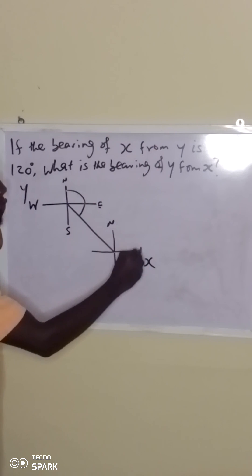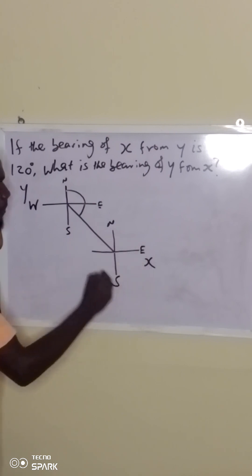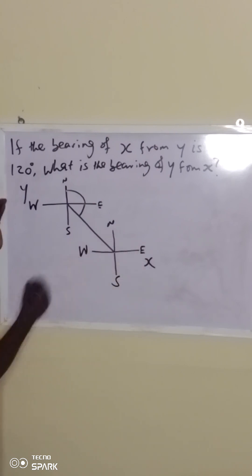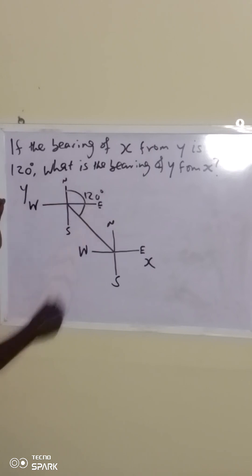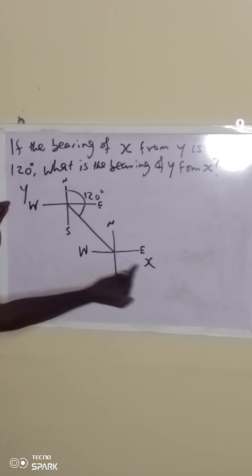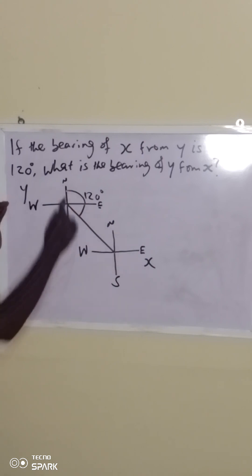So, we also have north, east, south, and west. So, from the north up to this point is 120 degrees. The bearing of x from y is 120.